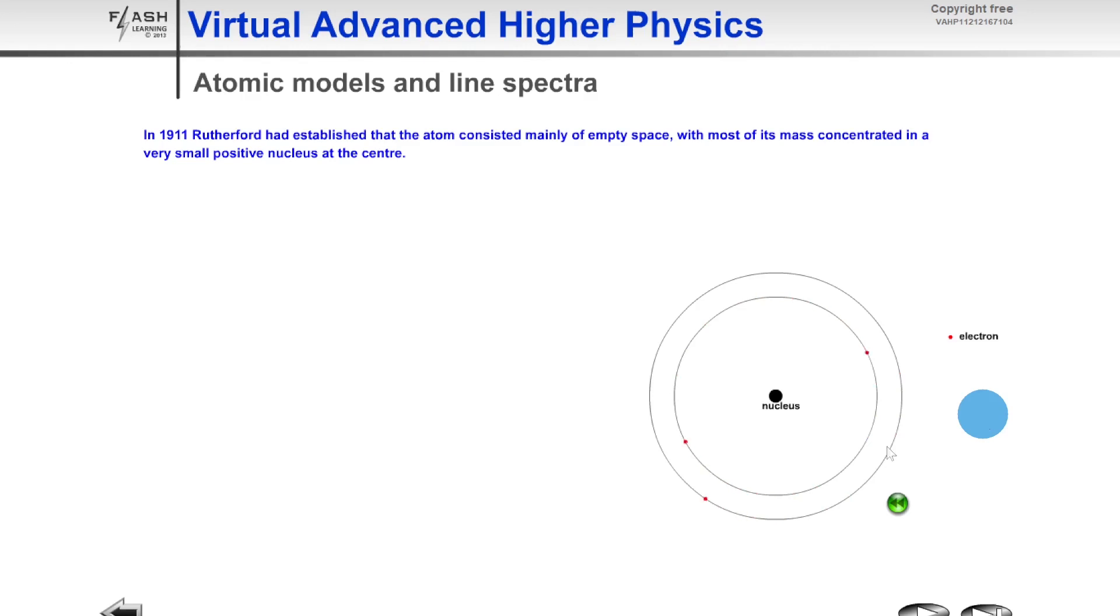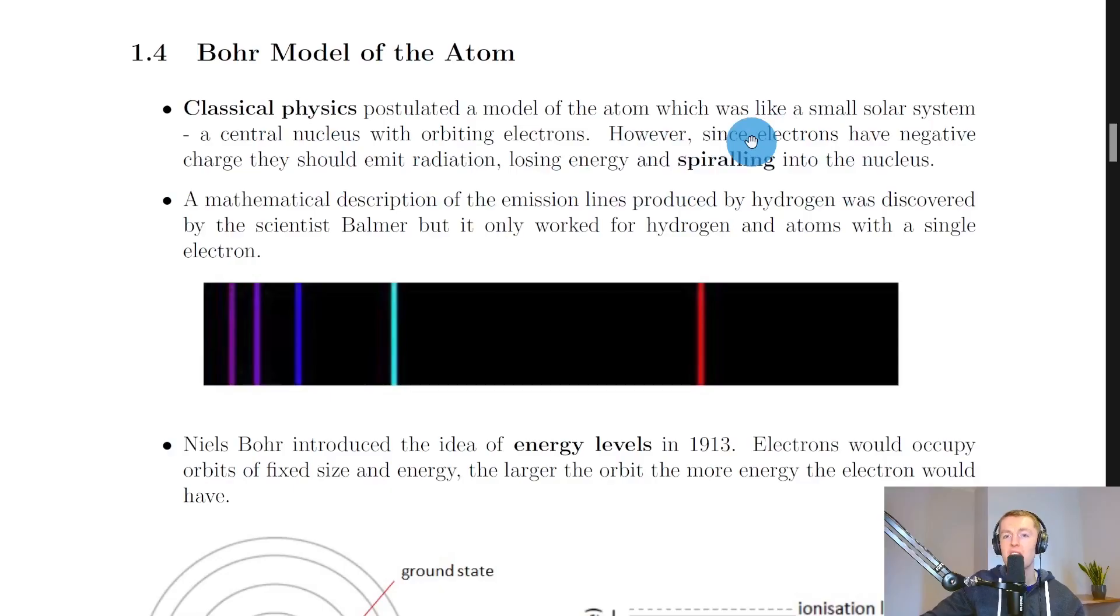So we're saying the problem with this model is that the electrons should emit radiation, lose energy and therefore spiral in towards the nucleus. But we know that that doesn't happen. So there must be something else going on here. A mathematical description of the emission lines produced by hydrogen was discovered by the scientist Balmer but it only worked for hydrogen and atoms with a single electron.